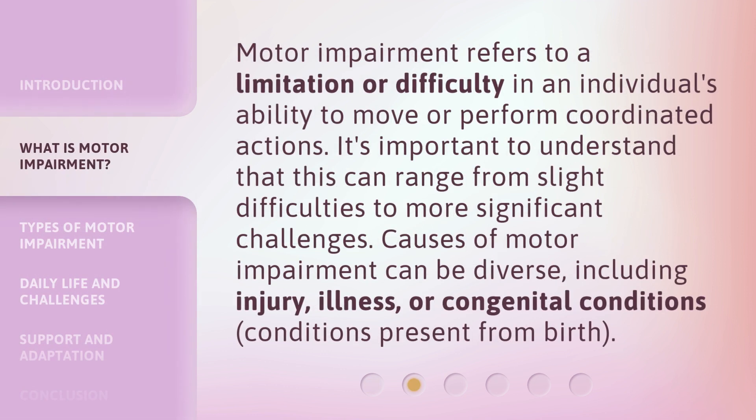Motor impairment refers to a limitation or difficulty in an individual's ability to move or perform coordinated actions. It's important to understand that this can range from slight difficulties to more significant challenges. Causes of motor impairment can be diverse, including injury, illness, or congenital conditions — conditions present from birth.